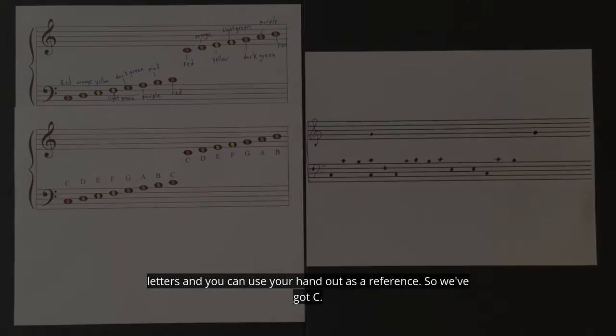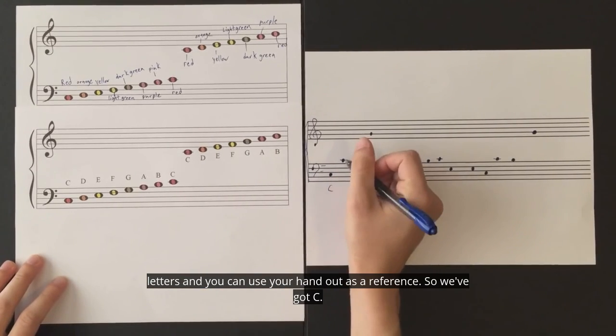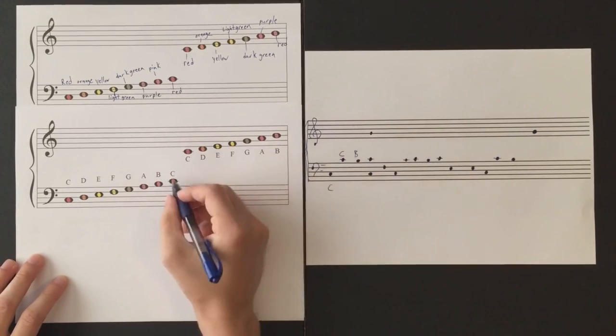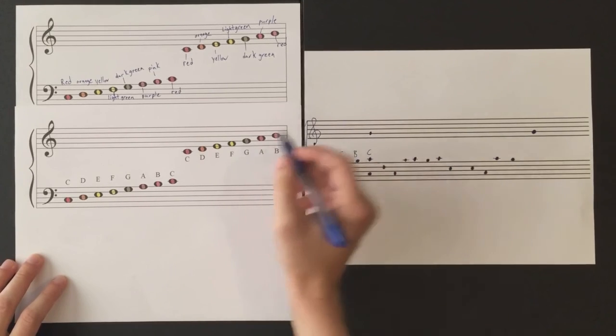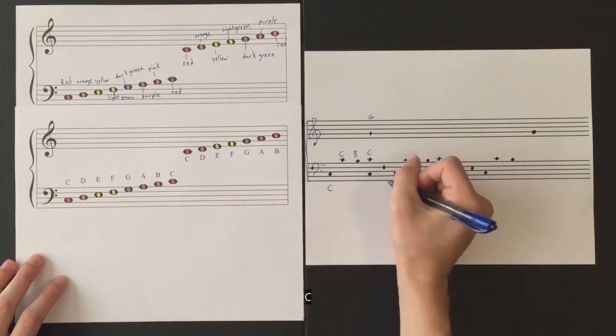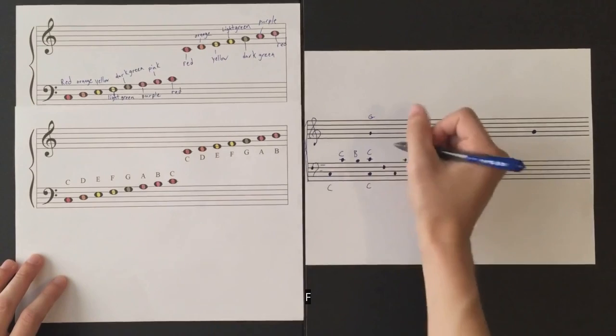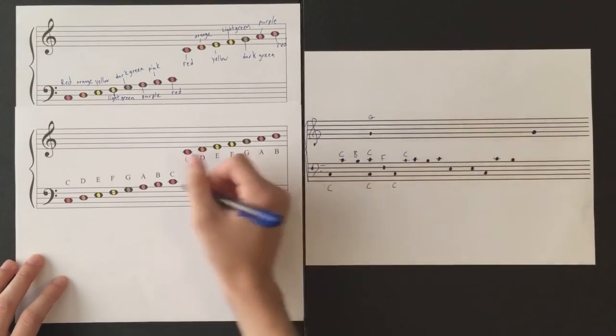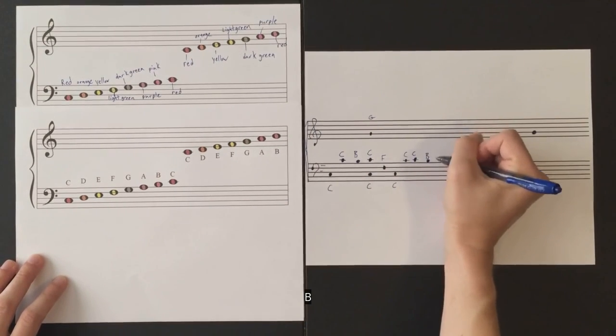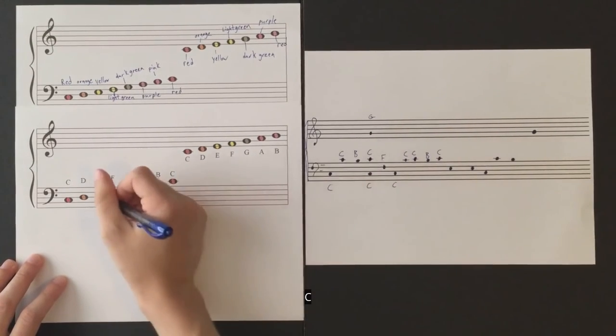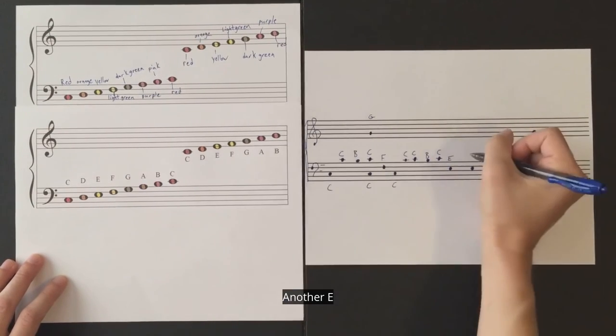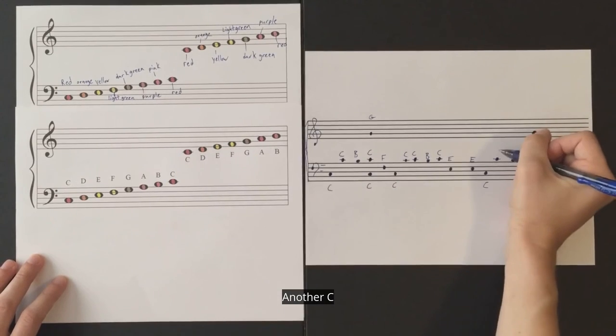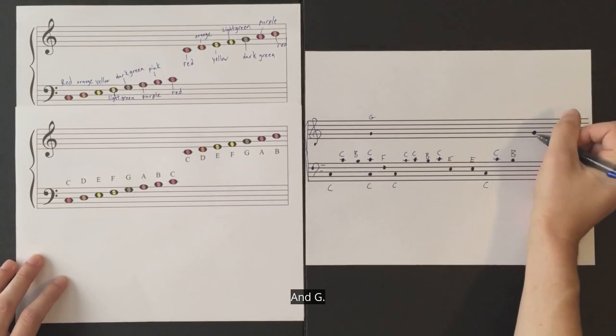I'll also want you to label notes with letters, and you can use your handout as a reference. So we've got C, we've got C, B, C, G, C, F, C, C, another C, B, C, C, E, another E, C, another C except it's the higher one, and then B, and G.